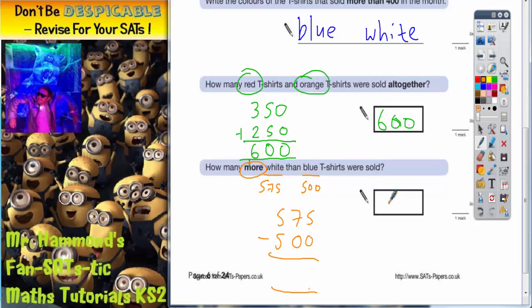Some of you will be able to see that it is 75. It is quite an easy one. Just to double check. 5 subtract 0 is 5. 7 subtract 0 is 7. 5 subtract 5 is nothing. So it is just 75.